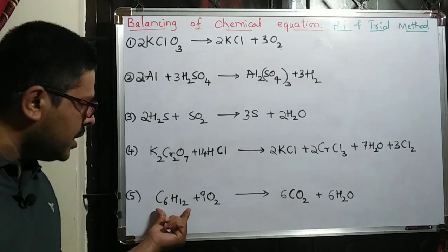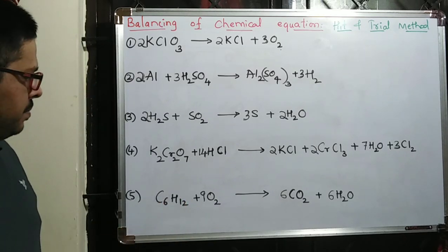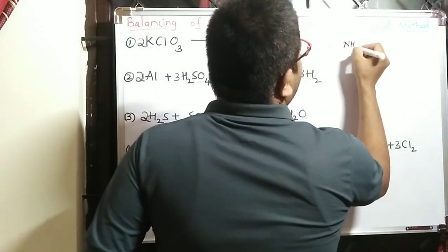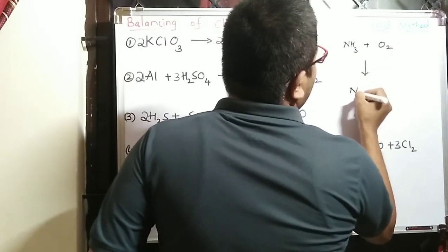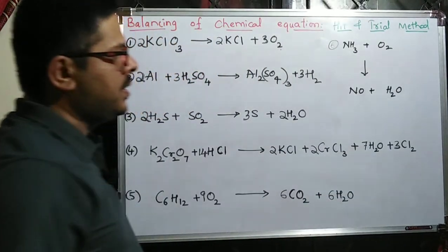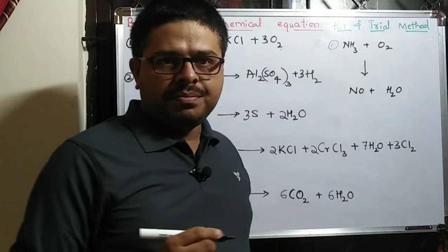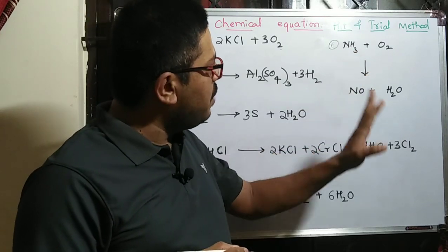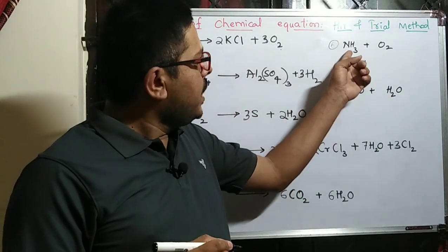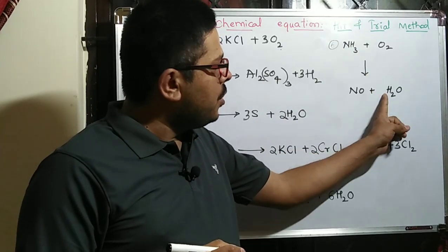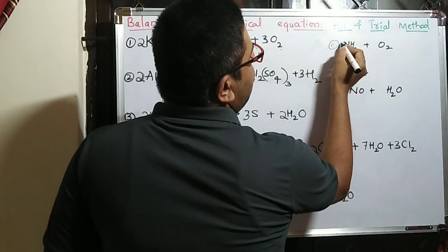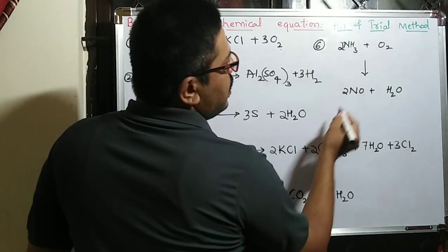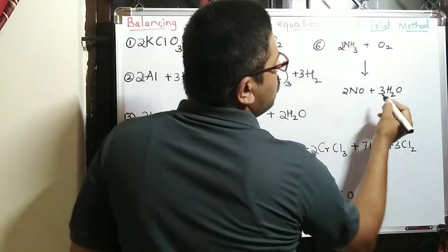Sixth example: NH3 plus O2 gives NO plus H2O. NH3 is the largest molecule with 4 atoms. 1N and 1N balanced. 3 hydrogens and 2 hydrogens — odd versus even. You have to make the odd side even. So add coefficient 2 before NH3: 2N, 3 × 2 = 6 hydrogens. Write 6 before H2O. But see — oxygen 2 on the left plus 3 on right is 5. We can't write 5/2 before O2, so this is not final.